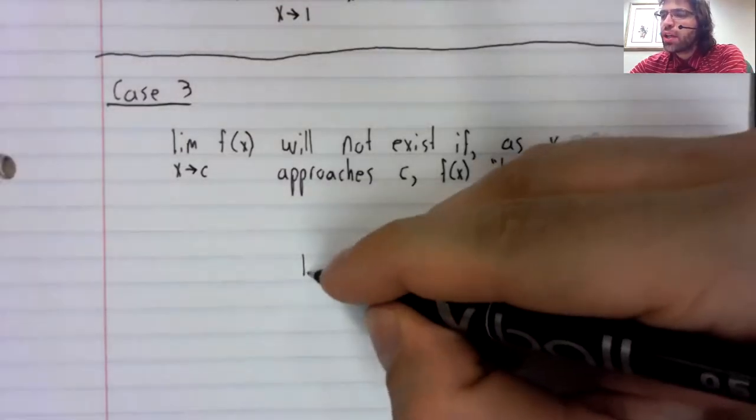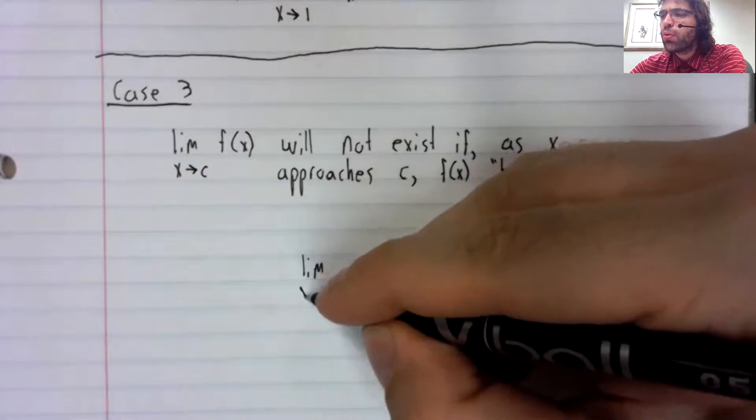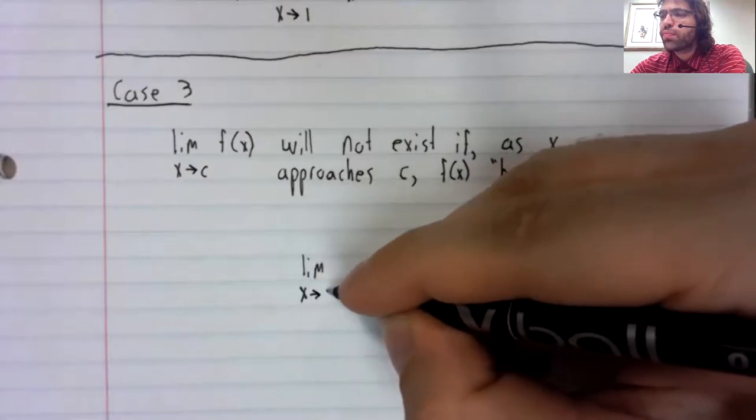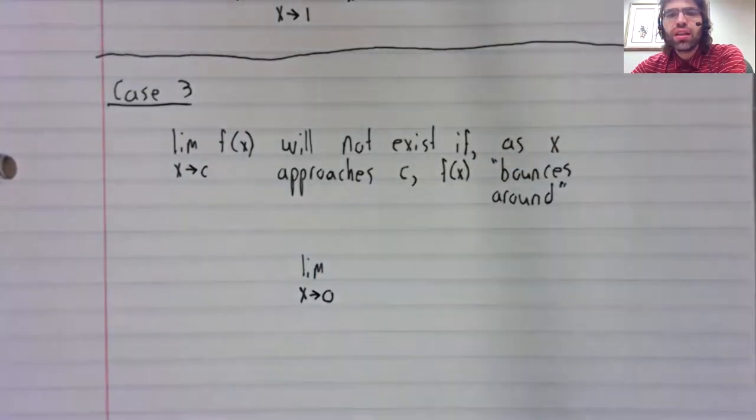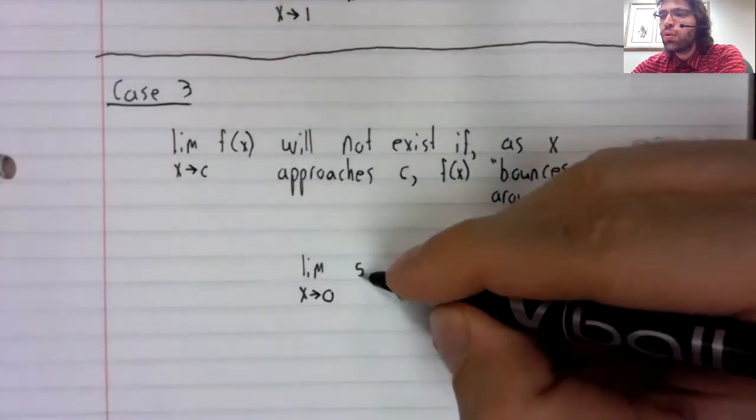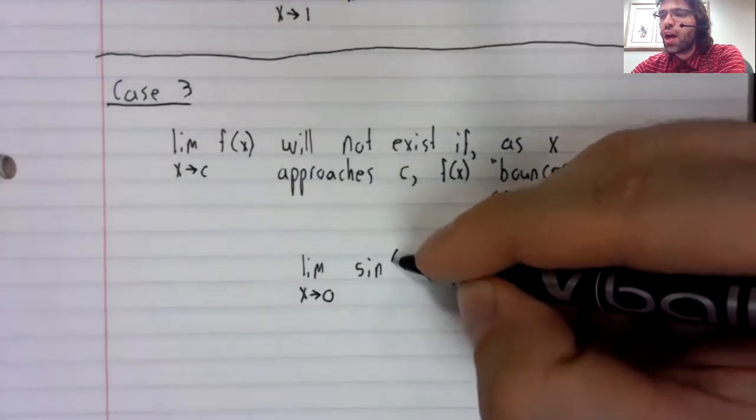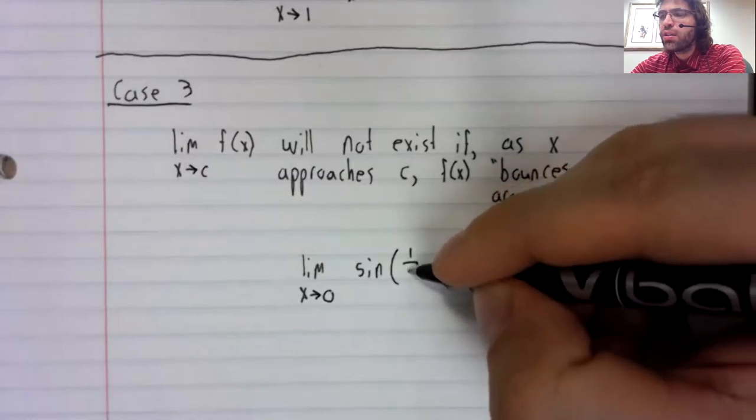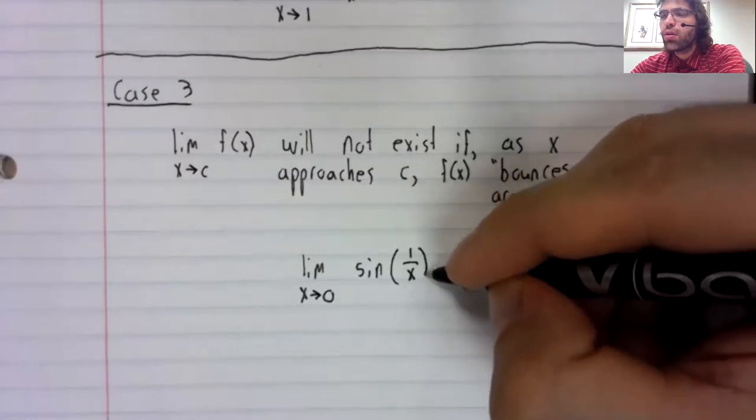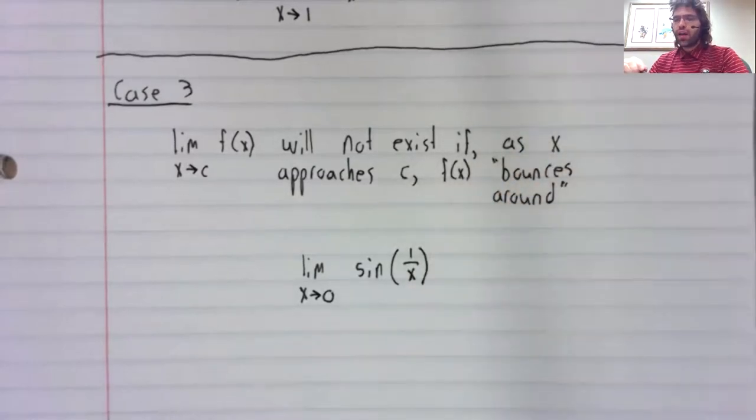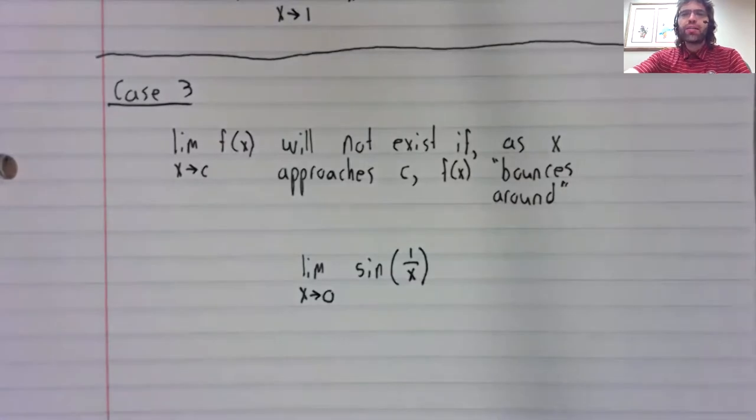The classic example of this is the limit as x approaches zero of sine of one divided by x.